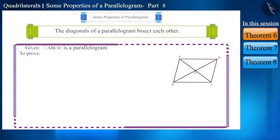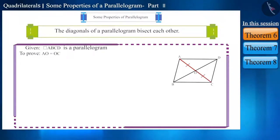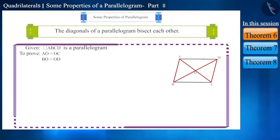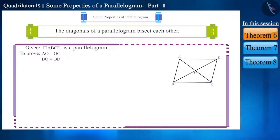Let's try to understand this property. According to the statement, AO should be equal to OC, and BO should be equal to OD. Let's prove this. This happens only if both these triangles are congruent to each other — that is, we have to prove that these two triangles are congruent.